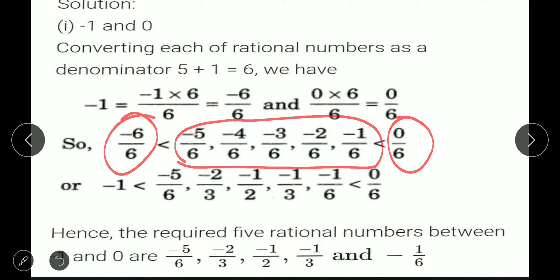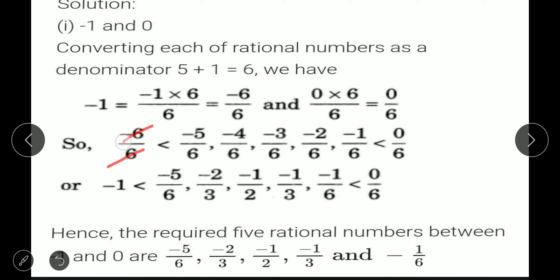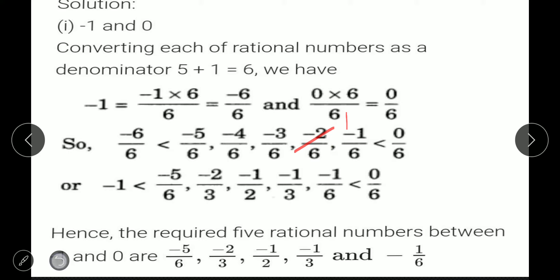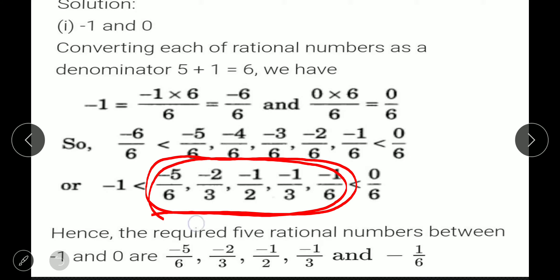Just cancel where possible. Minus 5 upon 6 — it cannot cancel, leave it. Minus 4 upon 6 — it can be cancelled: 2 twos are 4, 2 threes are 6, giving minus 2 upon 3. Minus 3 upon 6 — it can be cancelled: 3 ones are 3, 3 twos are 6, giving minus 1 upon 2. Minus 2 upon 6 — it can be cancelled: 2 ones are 2, 2 threes are 6, giving minus 1 upon 3. Minus 1 upon 6 — it cannot be cancelled, leave it. These are the 5 rational numbers between minus 1 and 0 in simplest form.